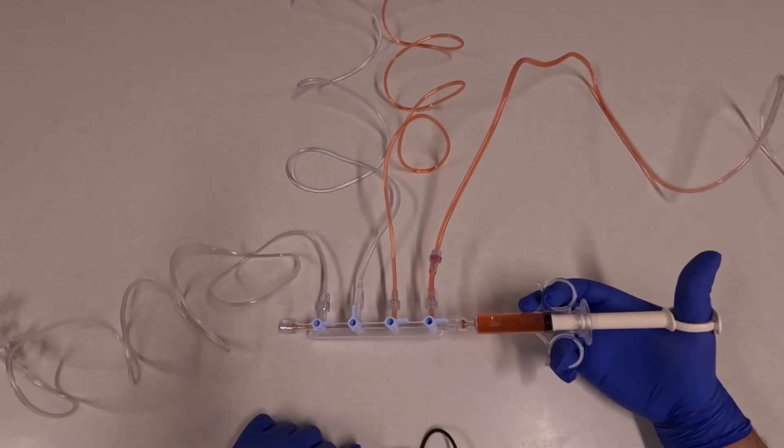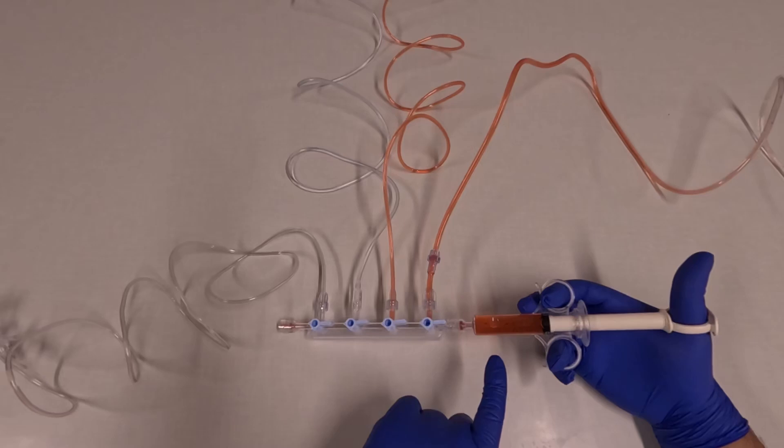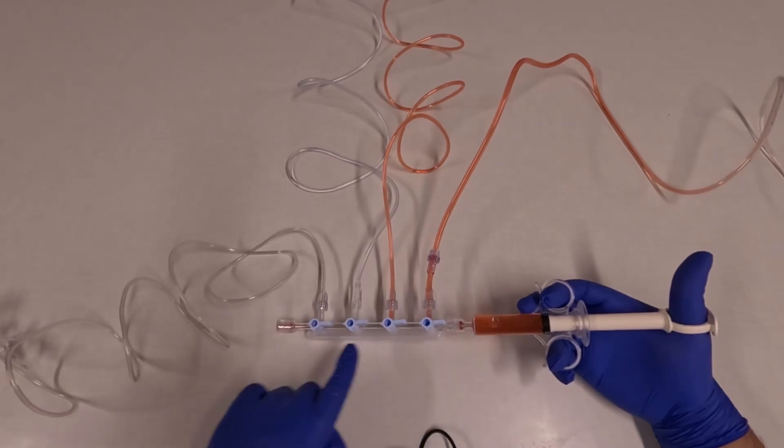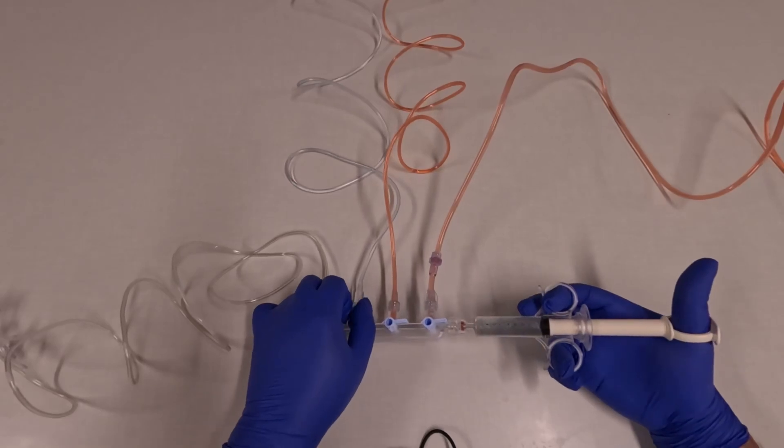Now if I want to dilute the contrast, I can turn the fluid port up and withdraw fluid into my syringe as well. So here, I have a 50-50 mix of fluid and contrast. Now I can inject that into the patient if I need.